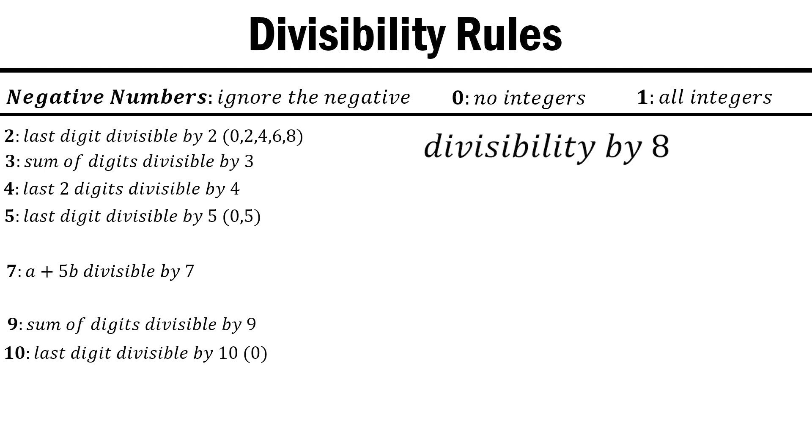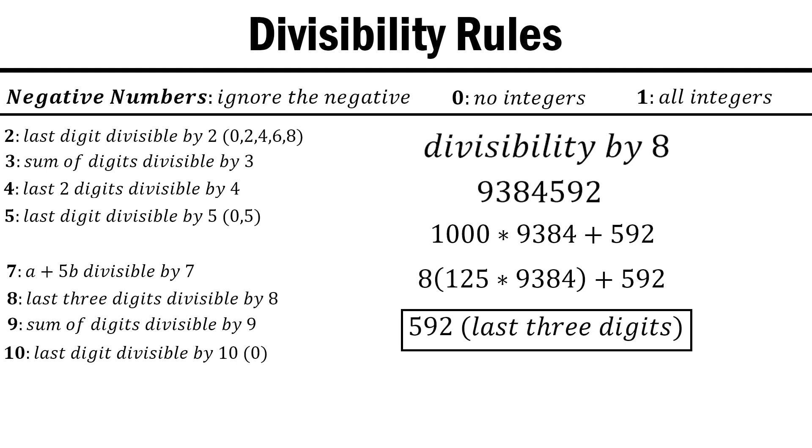Next up, we have 8. In the same way that we found our rules for 2 and 4, we can represent our number as 1000 times a long string of digits plus 592, the last 3 digits. 8 divides 1000, so all we have to do is check that it divides those last 3 digits. This isn't the easiest one to do in your head, but it's certainly easier than trying to do the whole long division.